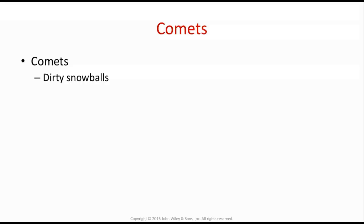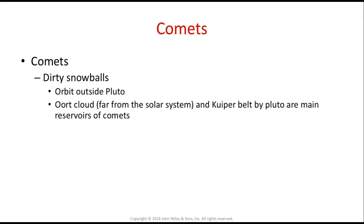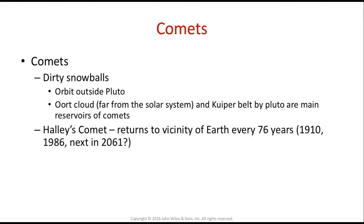Comets — you can think of them as dirty snowballs. They are big pieces of ice with some rock, and they orbit outside of Pluto in the Oort cloud — named after an astronomer — far, far away from the solar system, and in the Kuiper belt by Pluto. Those are the main reservoirs of comets. Some comets orbit and come back to the vicinity of Earth, where you can briefly see them. Halley's Comet returns to the vicinity of Earth every 76 years — it happened in 1910, then in 1986, and the next one will be 2061, so unfortunately about 41 more years before you might see it again.